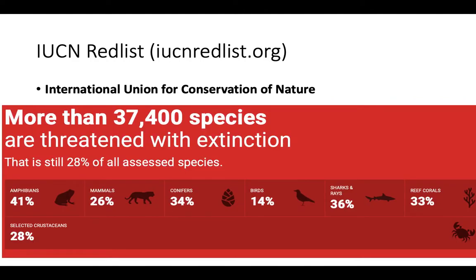The IUCN Red List — IUCN stands for International Union for Conservation of Nature — is one of the most famous resources cataloging all the endangered species, research on them, and conservation efforts put in place. If you look at the numbers, over 37,000 species are threatened to go extinct. That's 28% of all assessed species. Amphibians are particularly at risk, but these numbers are relatively high across all sorts of different groups of organisms.